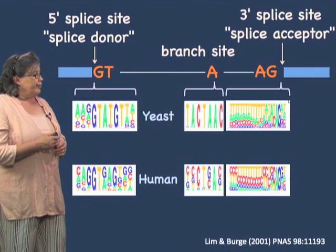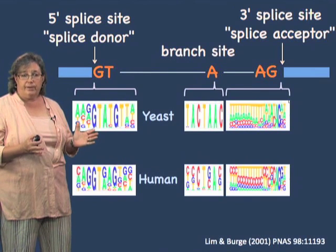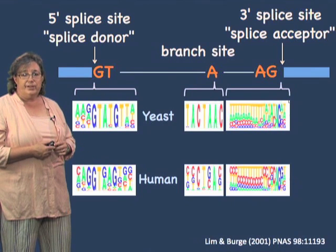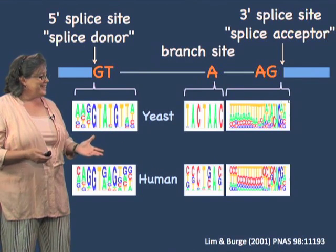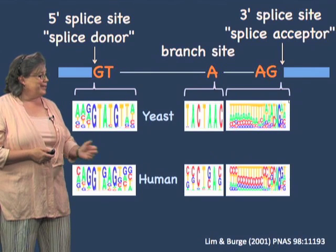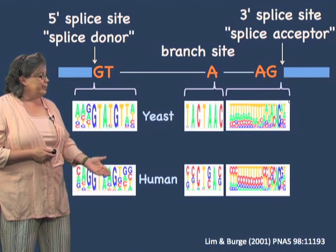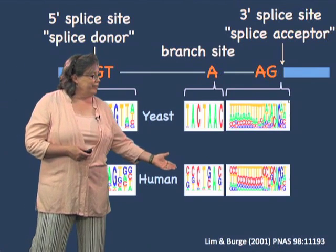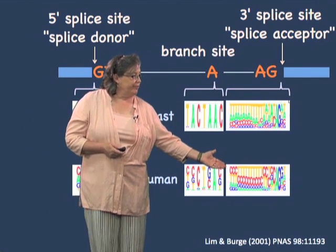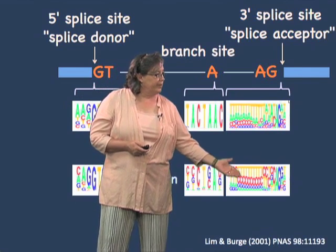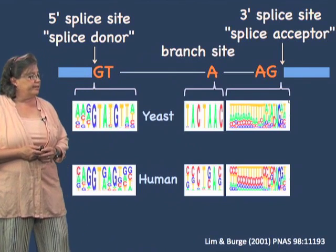Surprisingly, in humans — and remember, yeast only have about 250 introns and they are generally short, all less than a couple hundred nucleotides, whereas human introns are much, much longer — the human consensus sequences are actually less conserved. You can see there are many more letters here than in yeast. Particularly for the branch site, there is much less conservation. And for the 3' splice site, there's a little more information because of the so-called pyrimidine tract: a stretch of C's and T's upstream of the AG.